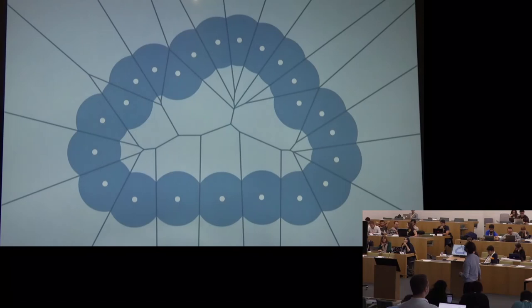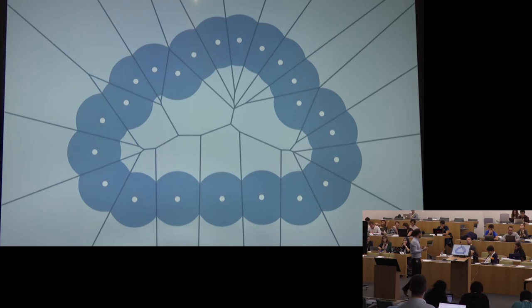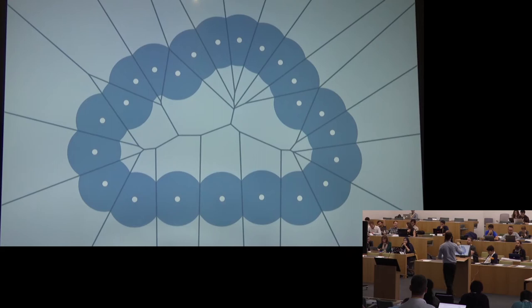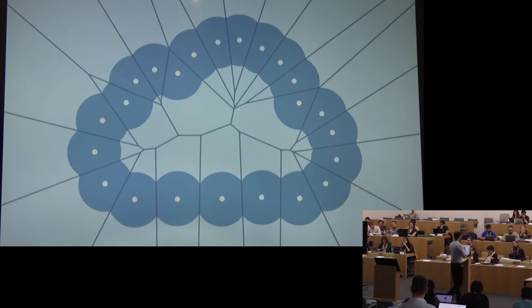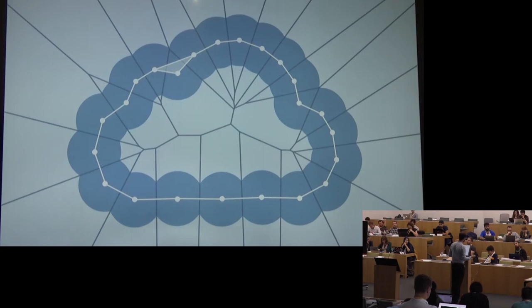Now we combine the two ideas. Both the Delaunay triangulation and the Čech complex were defined using intersection patterns: first, intersections of disks; second, intersections of Voronoi cells. Now we take Voronoi disks — for each point in the point cloud we take the Voronoi cell and intersect it with the disk of radius r. You clip the disks. The overlap now happens only at lower-dimensional pieces.